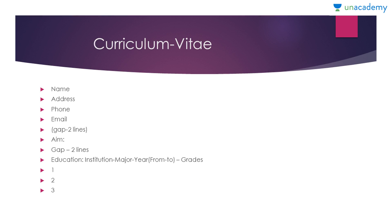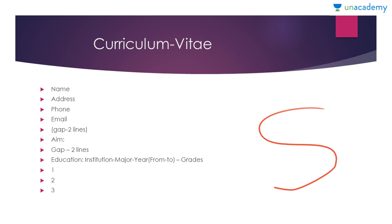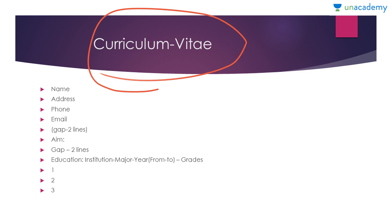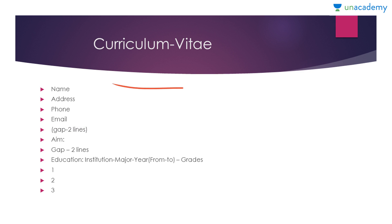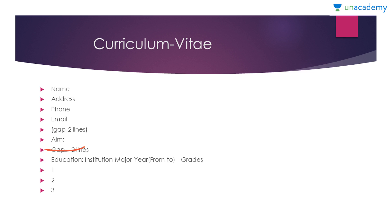This is the basic format of a CV. You can alter the style of presentation but please do not alter the sequence. The first section is your personal details: name, address, phone number, and email. Do not write labels like 'Name:' or 'Address:' — just write the information directly. It can be placed on the left-hand side or center of the page, not on the right. Then leave a gap of two lines and write your aim.